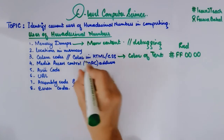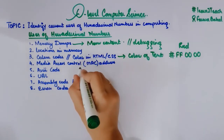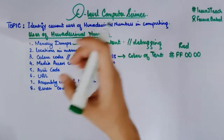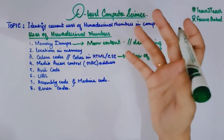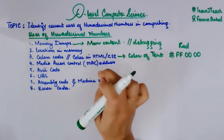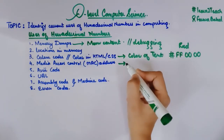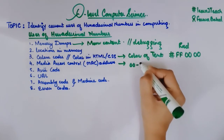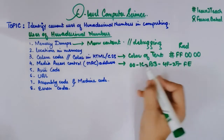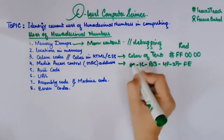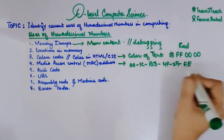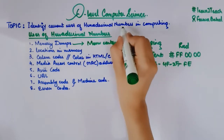Next is media access control — the MAC address. A MAC address is basically something that is used to identify your machine on the internet. In the internet, we have millions and millions of computers or machines that are connected together. In order to identify a single machine, we need to find out its media access control address, the MAC address. For example, a MAC address like 001CB34F25FE is basically a group of six hexadecimal digits, and this identifies a machine connected through the internet.